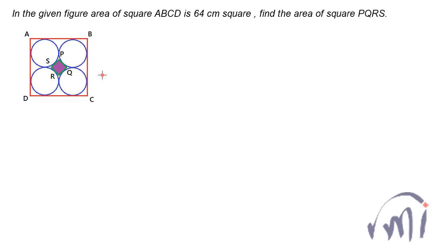It is actually a very simple problem. Area of ABCD is equal to 64, so one side will be equal to square root of 64 which is equal to 8. So AB is equal to 8 cm, and since we have two circles like this, that means diameter of each small circle is equal to 4 cm, or you can say the radius of each small circle is equal to 2 cm.